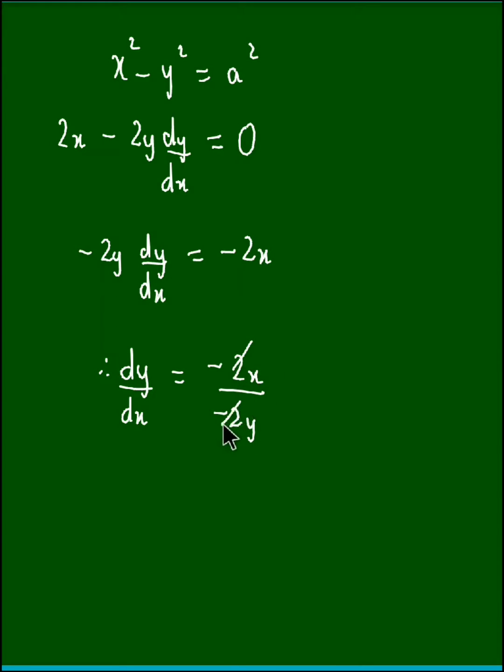The -2 cancels out, and we obtain dy/dx = x/y. The answer to this question is option d.